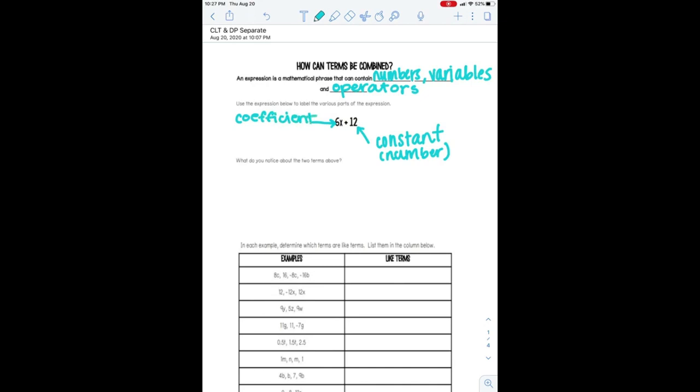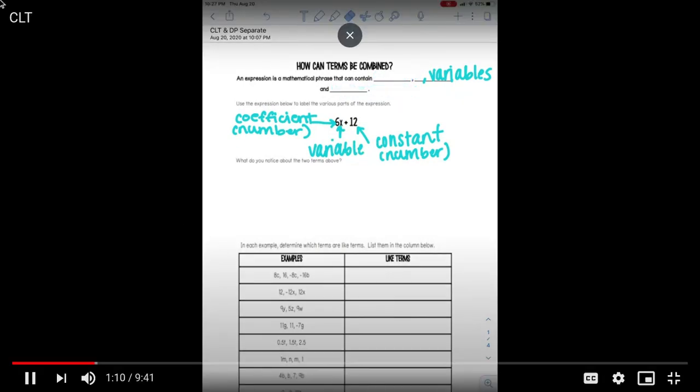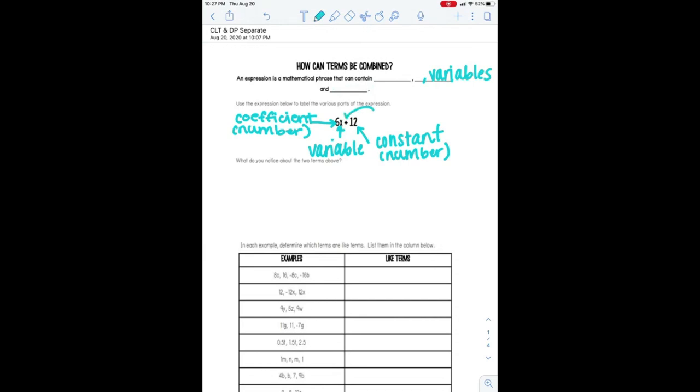Now, 6 is also obviously a number, but it's attached to a variable, so we call that a coefficient. Okay, x is obviously our variable. If you remember from middle school, all letters in expressions are variable.